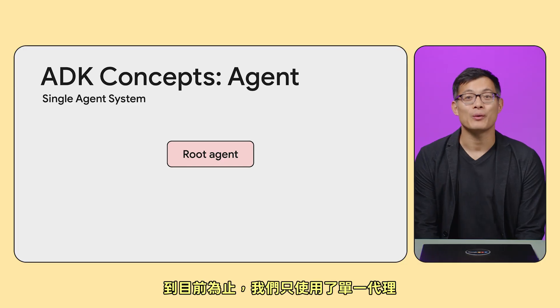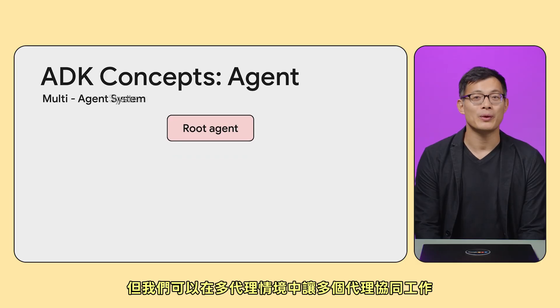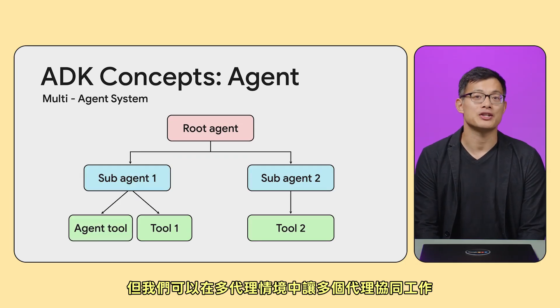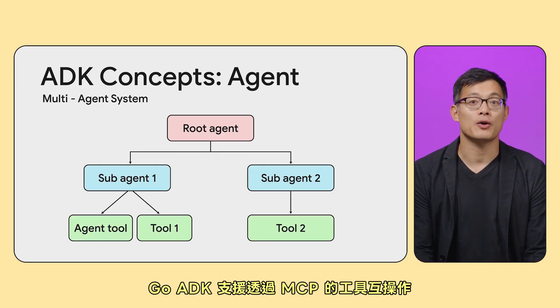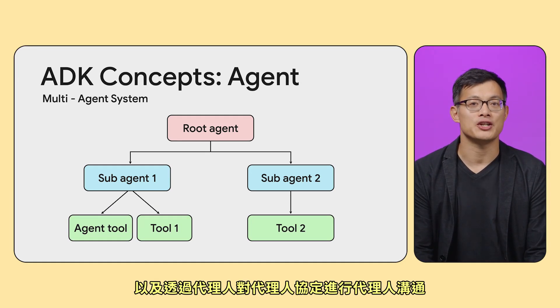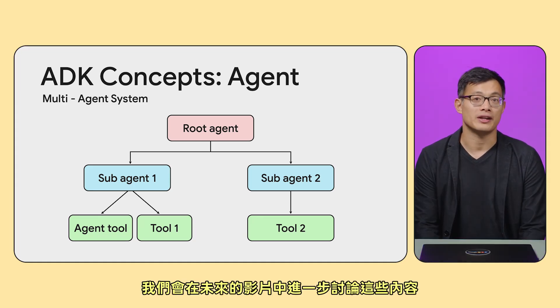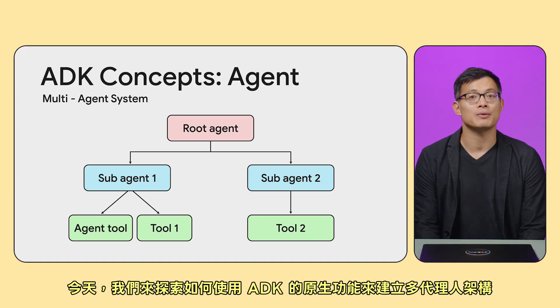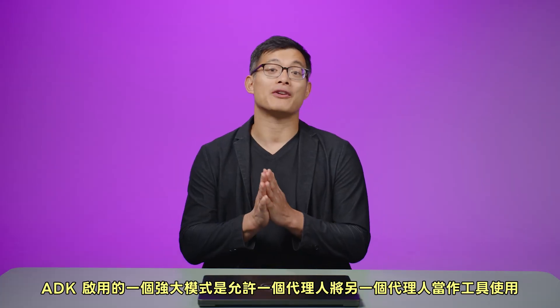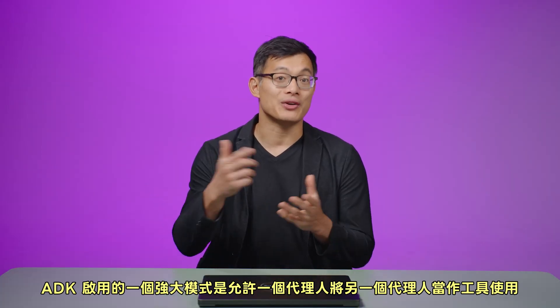Next, let's get into how we can implement more complex concepts. So far, we've only used a single agent, but we can have multiple agents collaborating together in a multi-agent scenario. Go ADK supports interoperability for tools via MCP and for agents via the agent-to-agent protocol. For today, let's explore how to build multi-agent architectures using ADK's native functionality. A powerful pattern ADK enables is allowing one agent to use another agent as a tool.